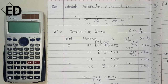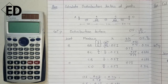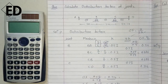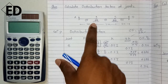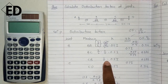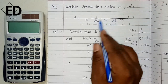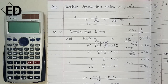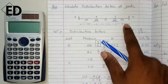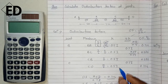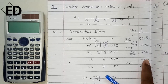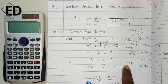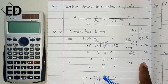For the second joint C, the members meeting there are BC and CD. Since both far ends (B and D) are fixed, rotational stiffness is I/L. For beam BC, I = I and L = 5, giving 0.2I. For beam CD, I = 3 and L = 6, giving 0.5I. The sum is 0.7I, so distribution factors are 0.2/0.7 = 0.286 for CB and 0.5/0.7 = 0.714 for CD.